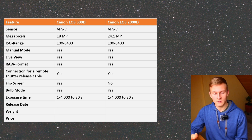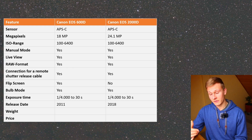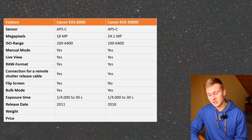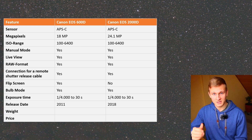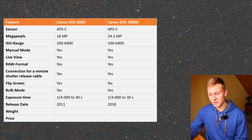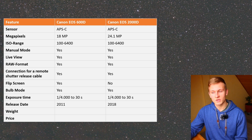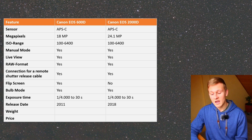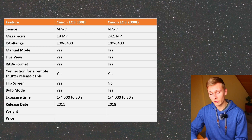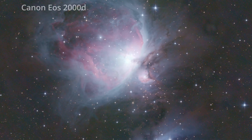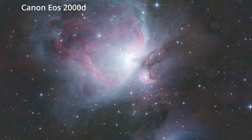Regarding exposure time, the range you can choose is the same for both cameras. As I mentioned, the Canon EOS 600D was released in 2011 and the Canon EOS 2000D in 2018, so there is a difference in sensor technology. From my personal testing and comparison of images, the Canon EOS 2000D definitely has less noise.